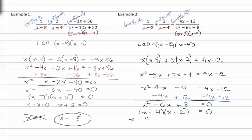Setting the factors equal to zero, my solutions for x are x equals four and x equals two.